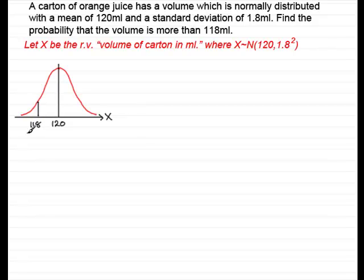Now it's an observed value and the standard letter for observed values is a little x when the random variable is capital X. We're interested in the volume of being more than 118 milliliters, so that means it's represented by this shading over here, this area. So just draw that in.